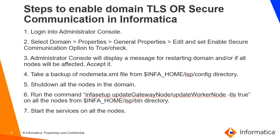The administrator console will display a message for restarting the domain. Now we will have to restart the nodes to take it into effect. We will have to accept it. Take a backup of the node.xml file from the Informatica home ISP config directory. Shut down all the nodes in the domain. Run the command infosetup update_gateway_node or update_worker_node based on the type of node with -tls true on all the nodes from the Informatica home ISP bin directory. Then start the services on the node.